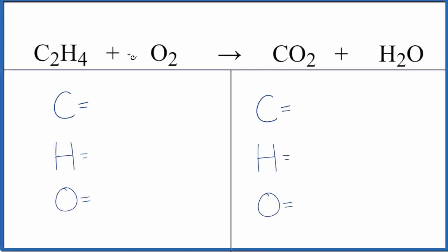Let's balance the equation for the combustion of ethene. So we have C2H4 plus O2. It's combustion because we have our hydrocarbon combining with oxygen, and it gives us carbon dioxide and water.